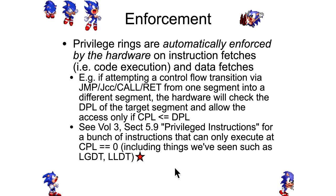The current privilege level — whatever is in the bottom two bits of the code segment register — must be less than or equal to the target DPL. So if you're in ring 3, the place you're jumping to needs a value greater than or equal to 3. If it's 0, that's not greater than or equal to 3, so it wouldn't allow a transition from ring 3 to ring 0, unless it was a conforming segment.